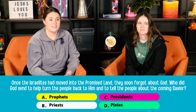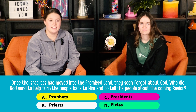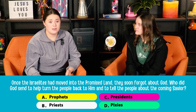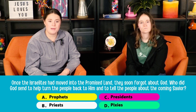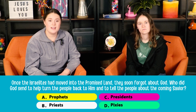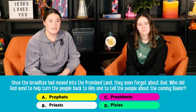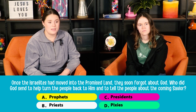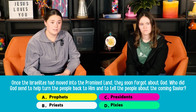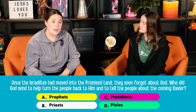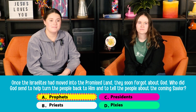Once the Israelites had moved into the promised land, they soon forgot about God. Who did God send to help turn the people back to Him and to tell the people about the coming Savior? A: prophets. B: priests. C: residents. And D: pixies. The right answer is A — prophets.